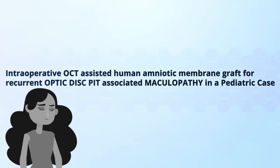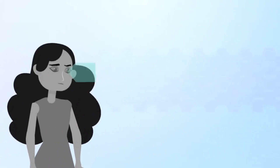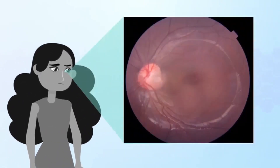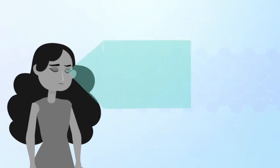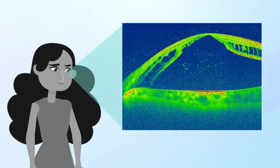The patient presented to us with gradual progressive diminution of vision since two weeks in her left eye. She had no history of ocular trauma. Anterior segment was within normal limits. Fundus examination revealed presence of optic disc pit associated maculopathy. Swift source OCT confirmed the findings of maculopathy and retinoschisis secondary to optic disc pit.